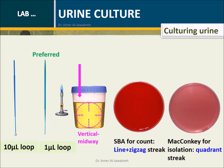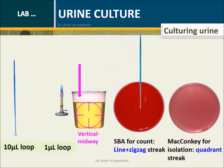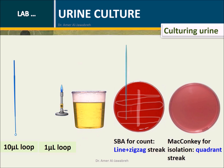Insert one microliter loop vertically and midway into the urine sample. Streak line plus zigzag on SBA for count. Repeat on MacConkey agar with quadrant streaking for isolation.